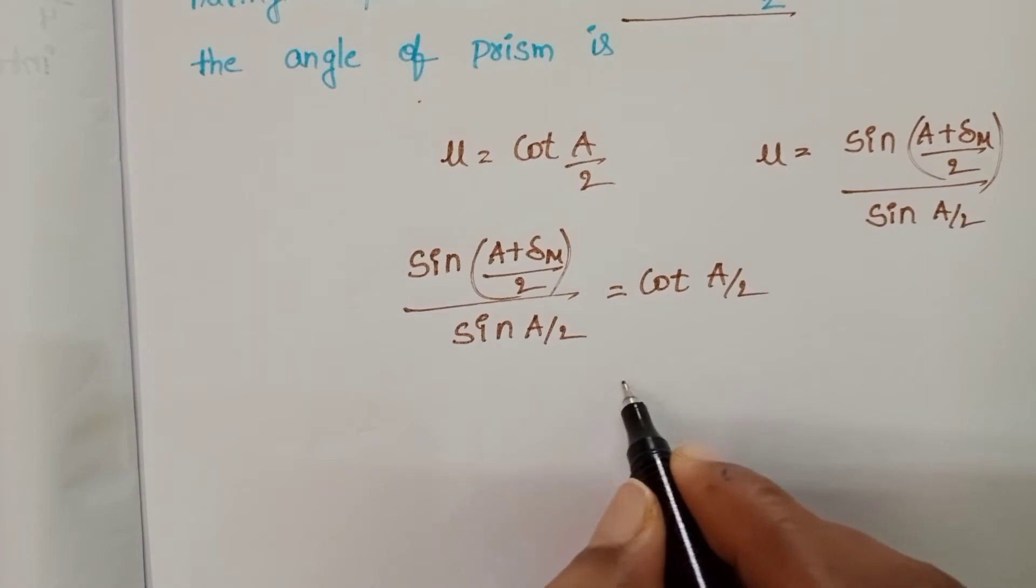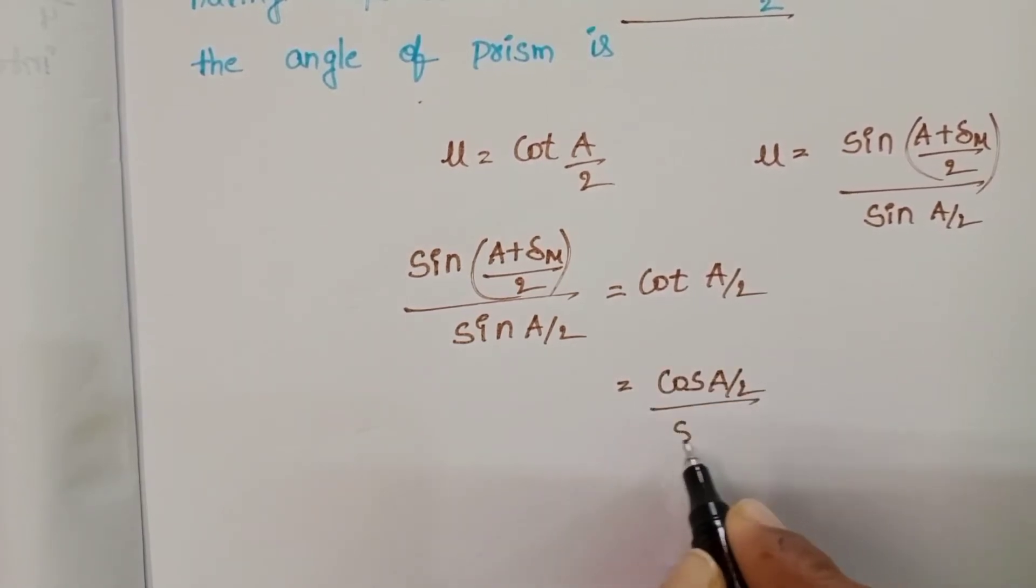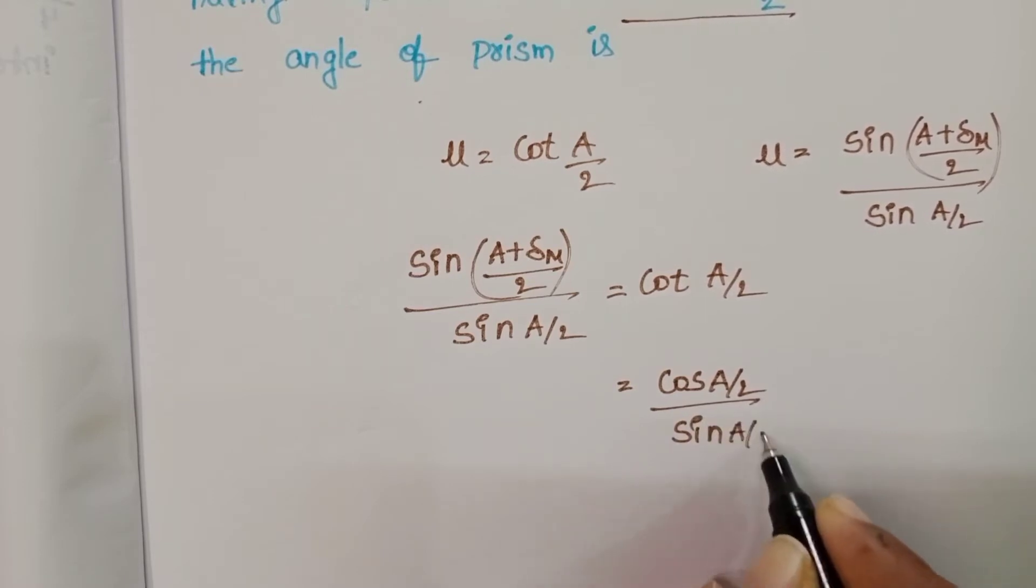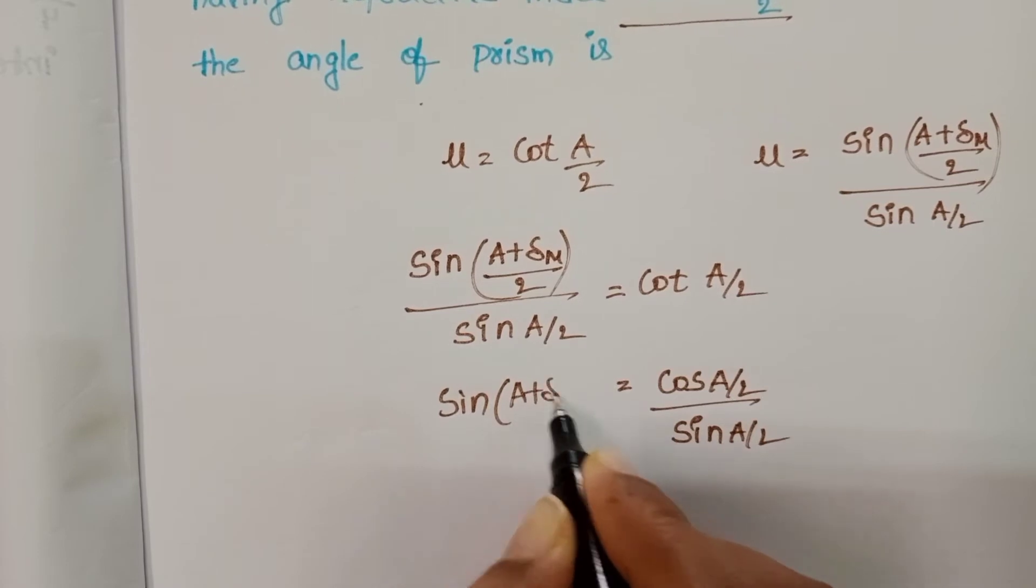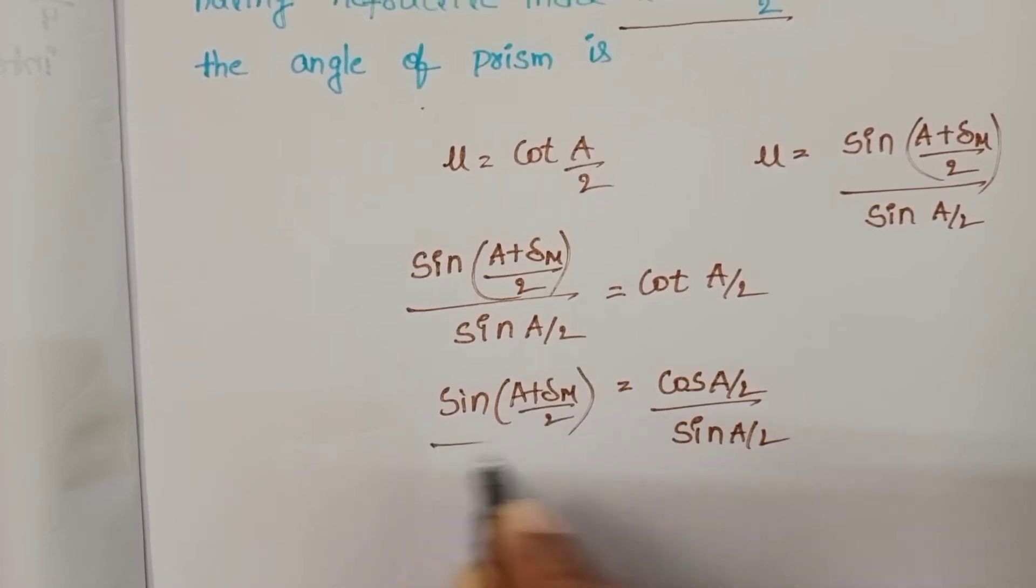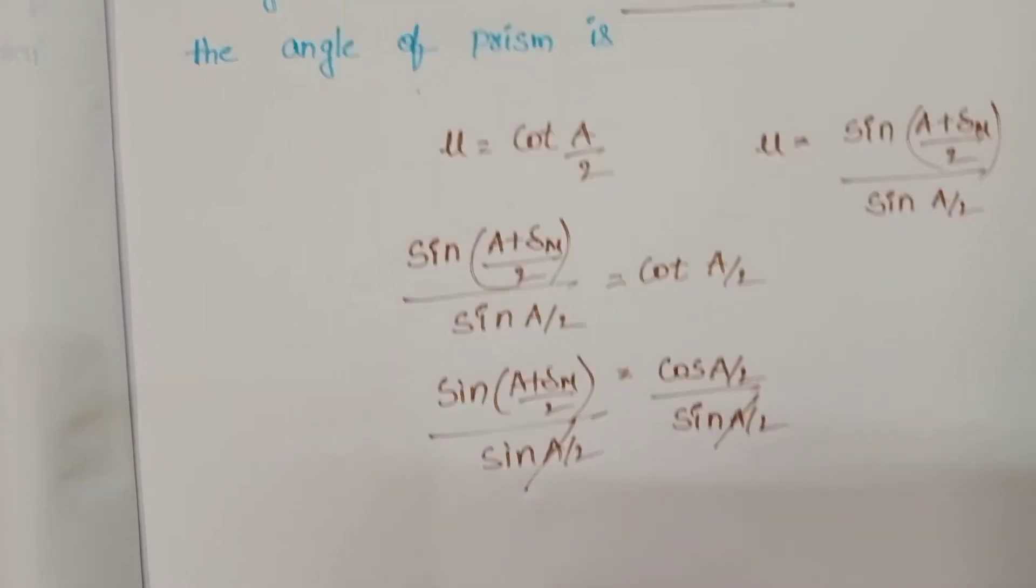We know cot A/2 equals cos A/2 divided by sin A/2. Multiplying both sides by sin A/2, the sin A/2 terms cancel.